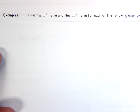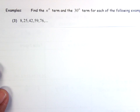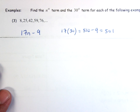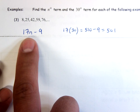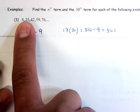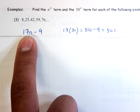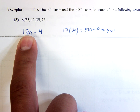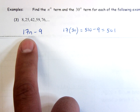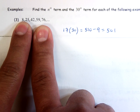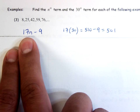Finding the nth term and the 30th term for the sequence: 8, 25, 42, 59, 76. The way we do these is find the difference between each number — it's going up by 17 every time. When finding the nth term, we put 17n. But 17 times 1 equals 17, and our first term is 8, so what do I do to 17 to get 8? Subtract 9. So the nth term is 17n − 9.